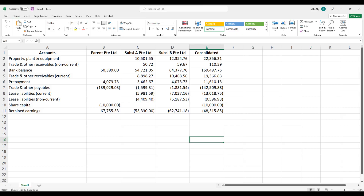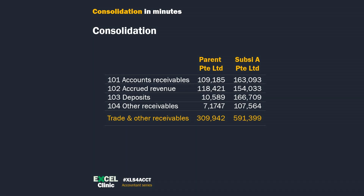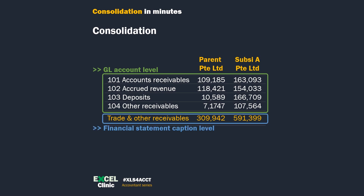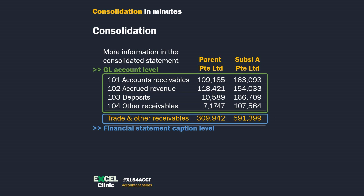This is a typical consolidation worksheet. You have a list of accounts and the group entities in the columns. Before we go into the details, first we need to determine the level at which we do the consolidation. I like to do the consolidation at GL account level. Some prefer to do it at the financial statement's caption level. Doing consolidation at the GL account level, or the trial balance, gives you more information in the consolidated statement.